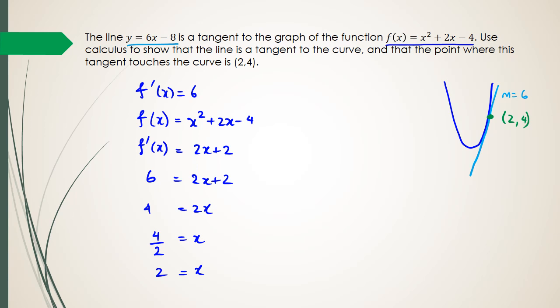So what I've actually just done now here is that I've actually shown that for the parabola, when the gradient is positive 6, the x value is actually equal to 2. So to figure out what the y value is, I can substitute x into the original function. So I can actually figure out what f of 2 is.